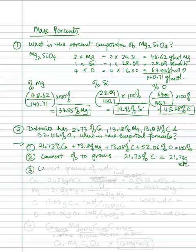The third step is to convert grams to moles. This is a little bit longer calculation. For calcium, take 21.73 grams calcium and convert that into moles. In one mole, we have 40.08 grams of calcium. This equals 0.5422 moles calcium.